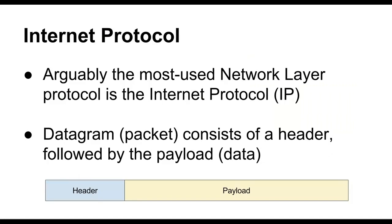The most common network layer protocol we use today is the Internet Protocol, or IP. A datagram in the Internet Protocol — also called a packet — consists of a header followed by the payload. The payload is the data that we would like to transmit.